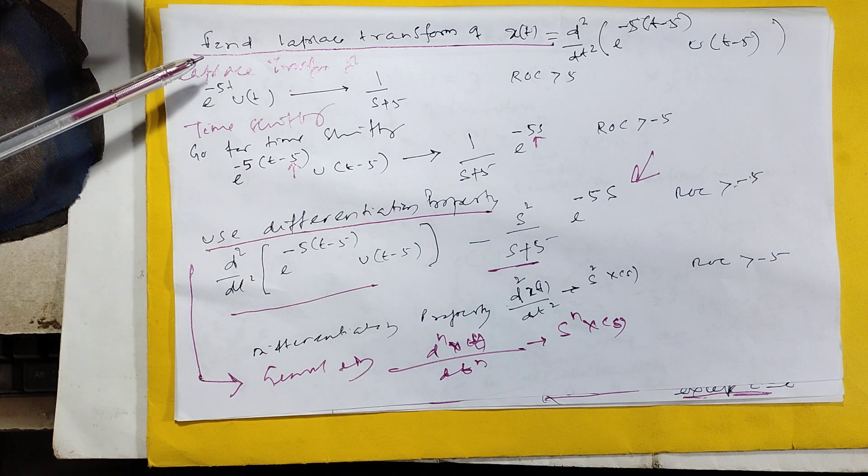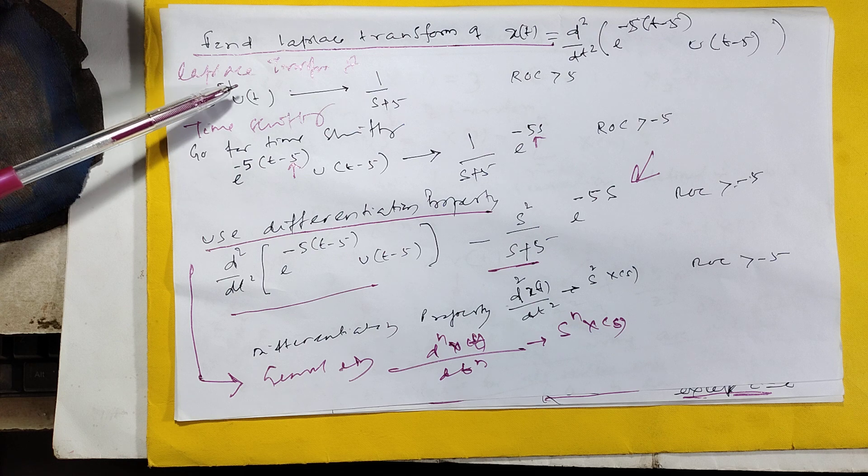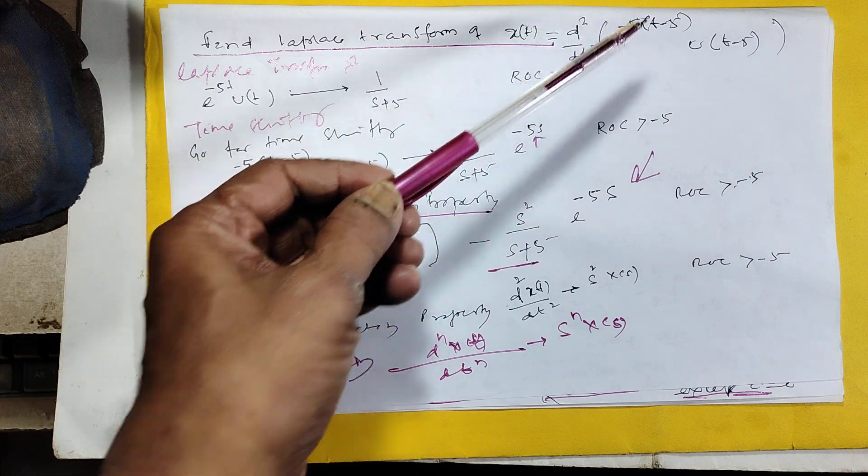This is the step - what is u(t) and e^(-5t)·u(t). Because why is it 5t? Because here 5t is there.